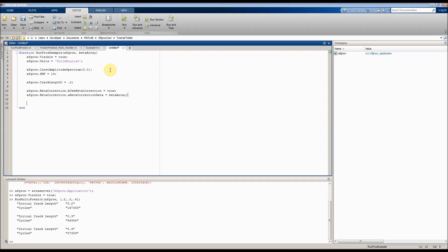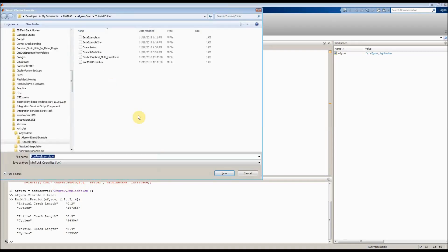Finally, we're going to call runFrozenPredict by making sure that we set an array that can receive the values. So we'll set return the value cycles, and then I don't care about all the other parameters for this example. So we'll just include tilde here, equals AFGRO.runFrozenPredict. And we'll actually leave out the semicolon so that we can see the output.